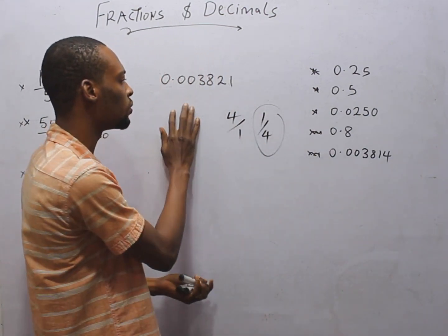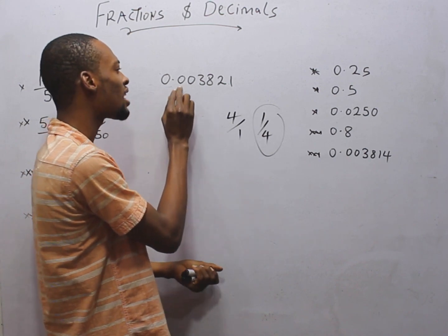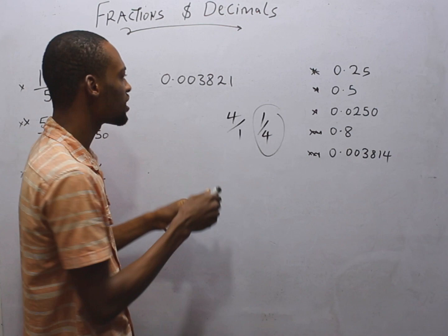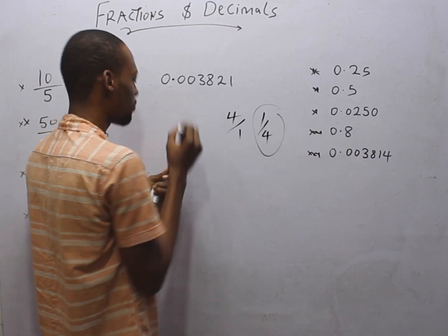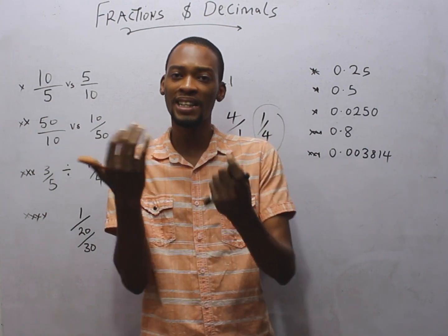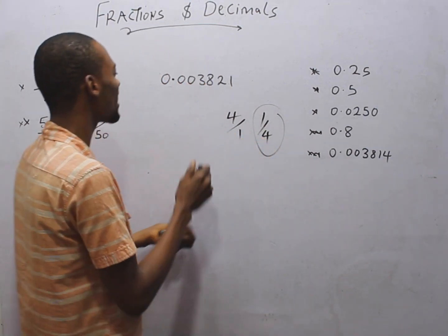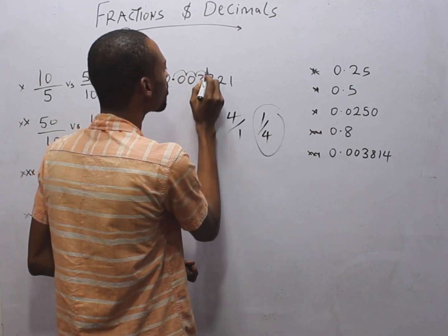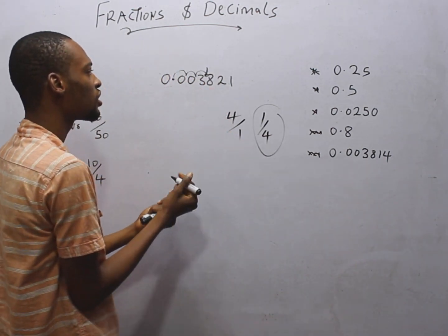Given this value, 0.003821, this is a decimal number because of this decimal point. If I say round off to 3 decimal places, you simply start counting from here. This is 1 to 3. So this is the third decimal place.